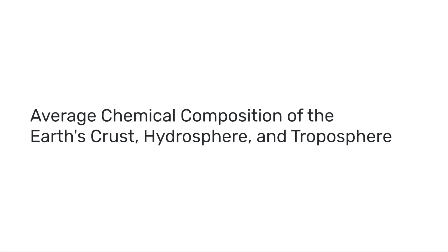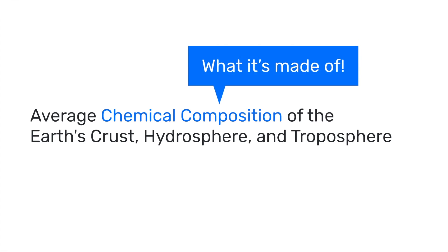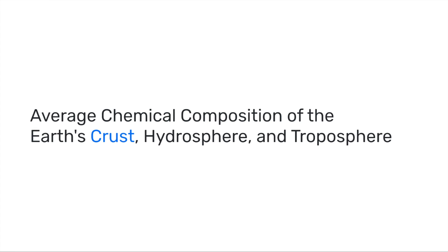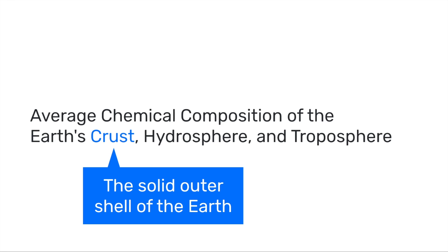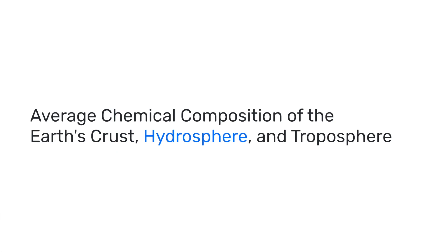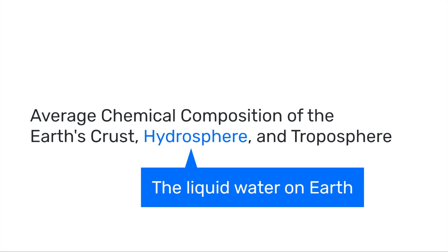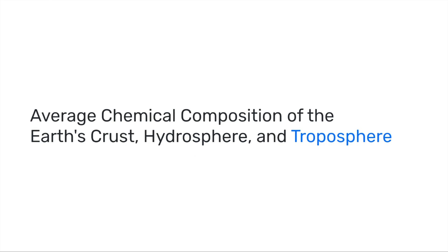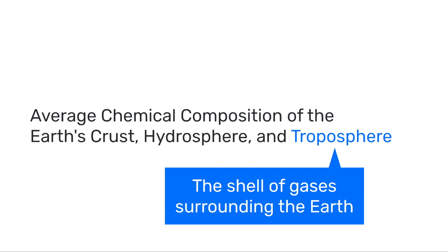This chart is called the average chemical composition, which refers to what something is made up of. We're going to be looking at the crust, which is the solid outer shell of the Earth; the hydrosphere, which is the liquid water that's on Earth; and the troposphere, which is the shell of gases that surrounds the Earth — it's the lower part of the atmosphere.